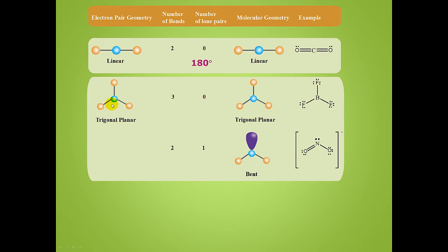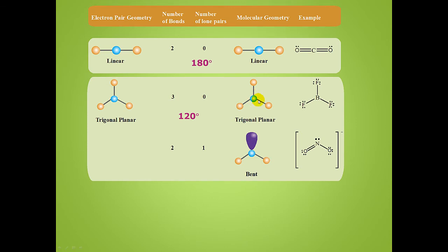Let's take a look at trigonal planar. Here we have three bonds about a central atom, and they will orient themselves as far away from one another as possible, so these bond angles must be 120 degrees. When we have a central atom surrounded by three atoms, the electron pair geometry is trigonal planar. And if there are three atoms bonded to that central atom with no lone pairs, the molecular geometry is also trigonal planar.